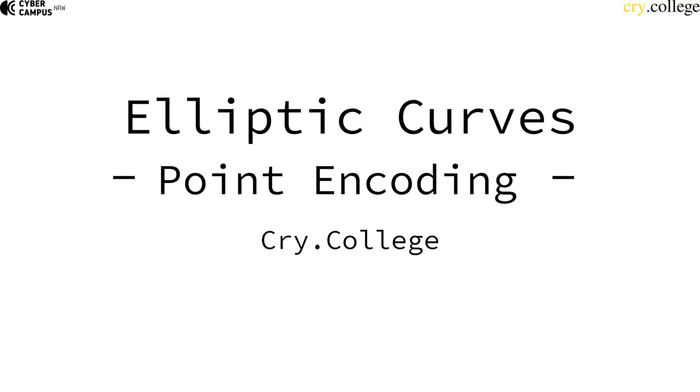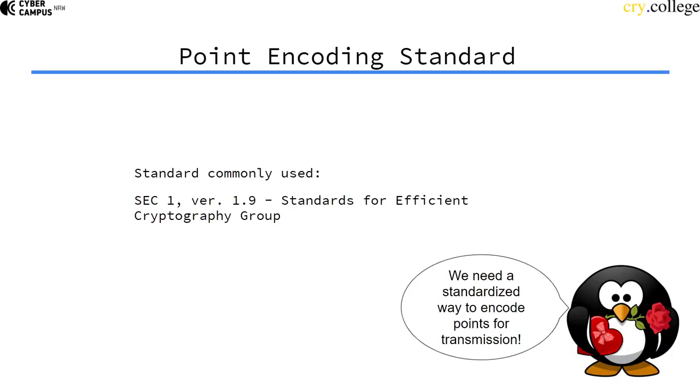One last thing I have to teach you before I can let you do the assignments is point encoding. We need some form of encoding for points in case we use them, for example in the elliptic curve Diffie-Hellman, because the other party needs to know how to interpret this point.